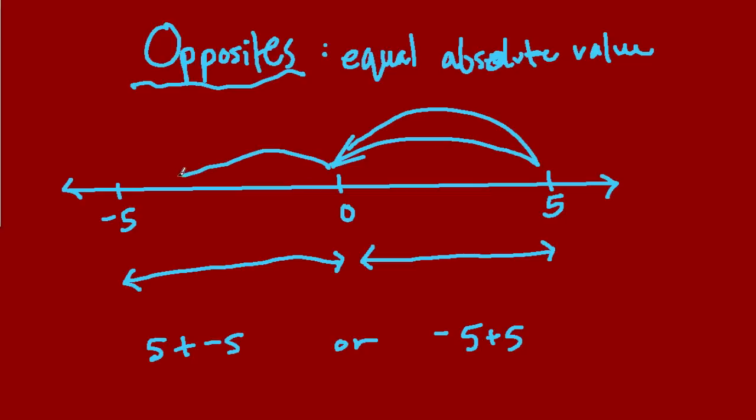Or if I start at negative 5, and then add 5, I come back to 0. So opposites, no matter what, always come back to 0. So we say they always sum to 0.